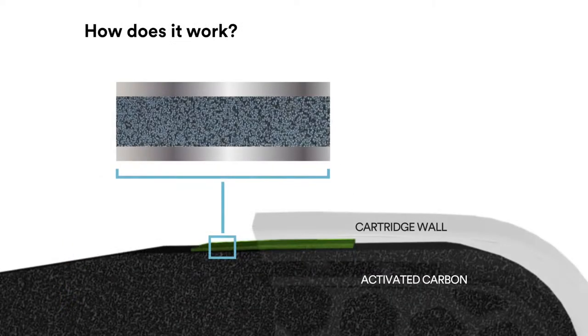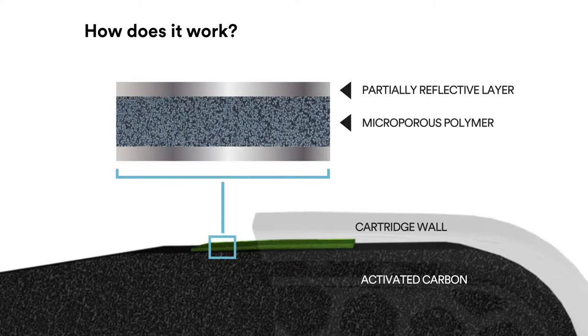The ESLI has a partially reflective top layer, a microporous polymer, and a reflective bottom layer.